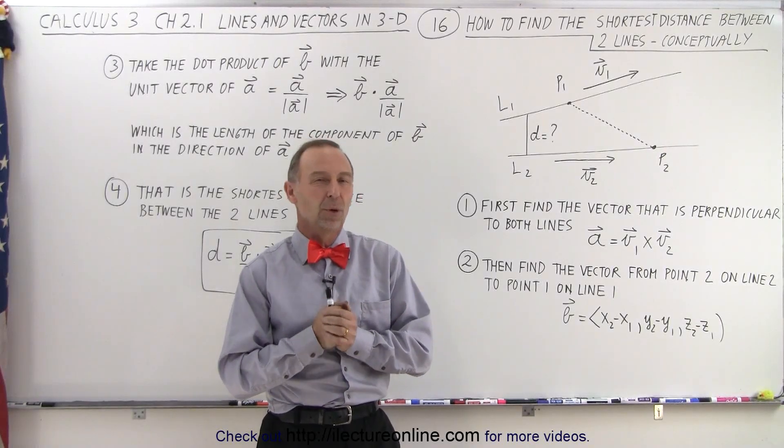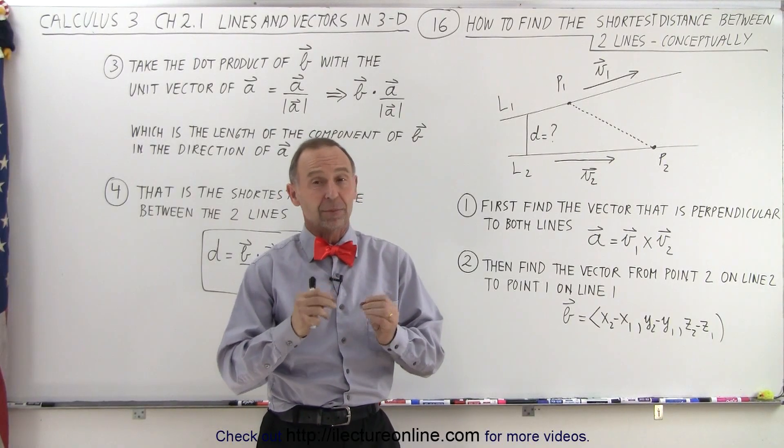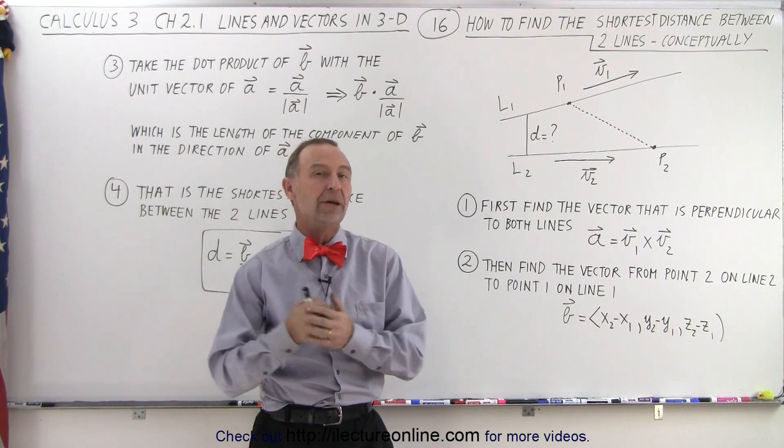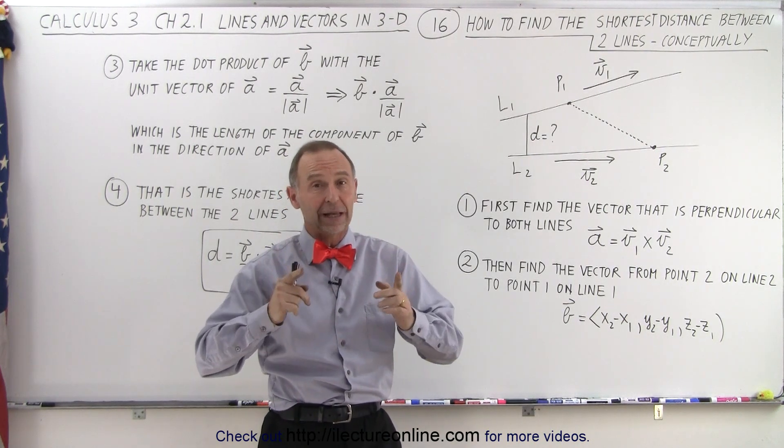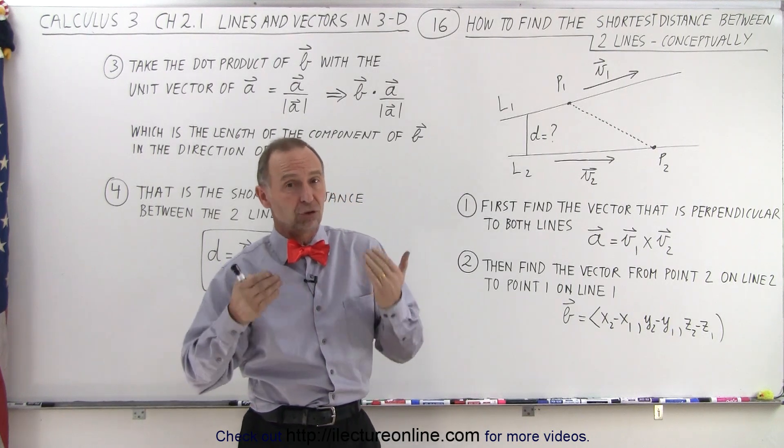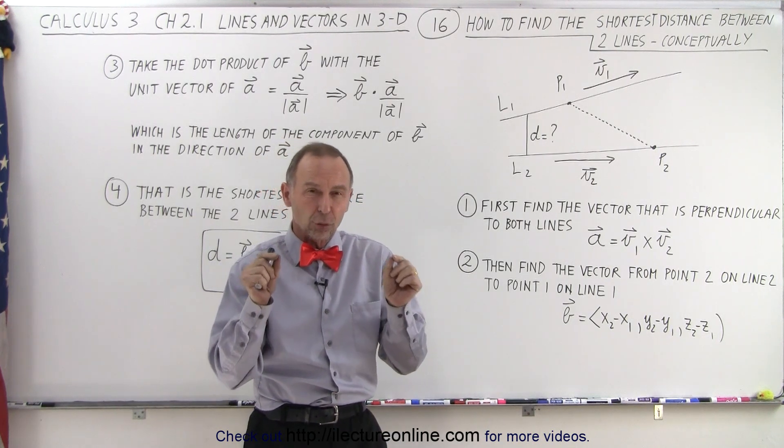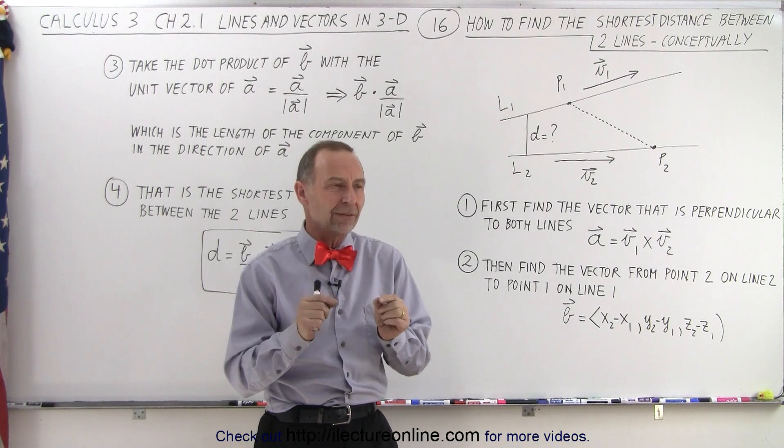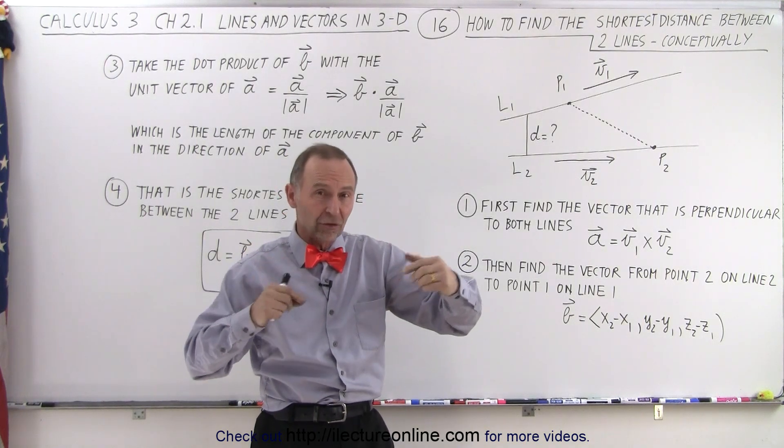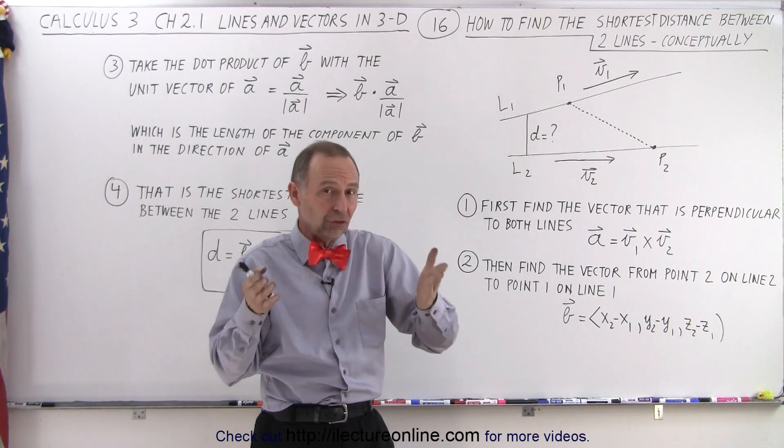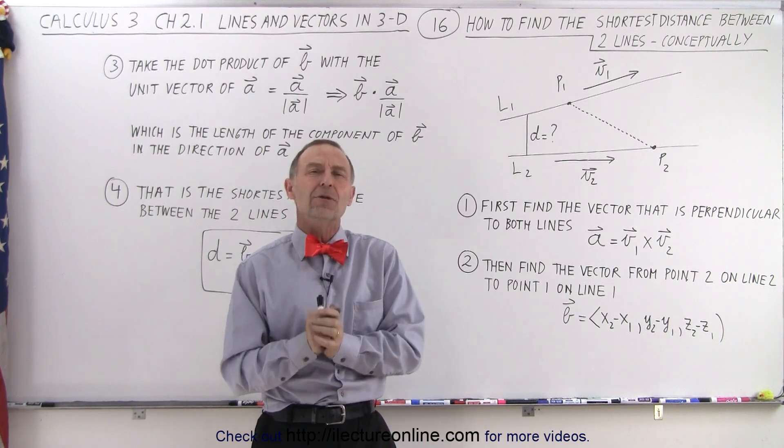Welcome to our lecture online. One of the more difficult concepts when we're dealing with lines in three dimensions is finding the shortest distance between two lines that are not necessarily parallel, that can be skewed, but we're trying to find the shortest distance between those two lines. And we don't have the points at the locations where we seem to draw a line across saying that's the shortest distance. How do we do that?